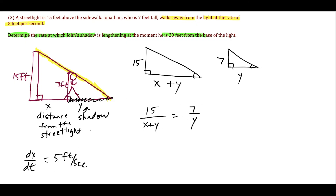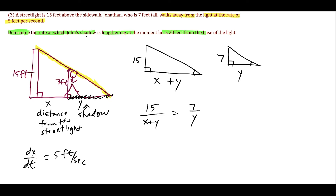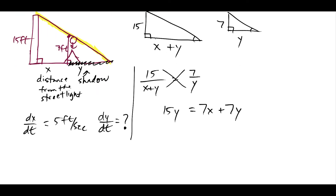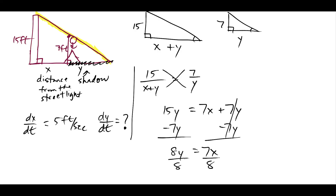The two triangles are similar by angle-angle similarity, so we set up the proportion 15 over (X plus Y) equals 7 over Y. Cross-multiplying gives 15Y equals 7X plus 7Y. Subtracting 7Y from both sides gives 8Y equals 7X, so solving for Y yields Y equals seven-eighths X. This is our primary equation.